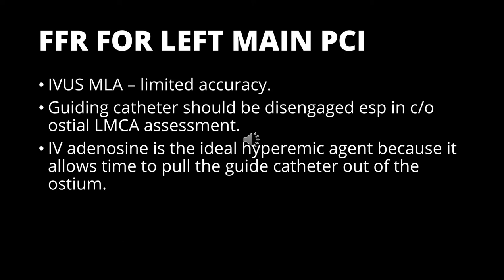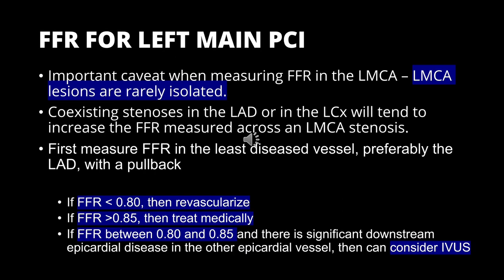For assessment of an ostial left main, since the guide catheter must be disengaged, intracoronary hyperemic agents may not be the ideal choice, making IV adenosine a better option. Another important point is that left main stenosis is very rarely isolated — it is usually associated with disease in the LAD or left circumflex artery. Coexisting disease in the LAD or circumflex will tend to increase the FFR value while measuring it for left main coronary artery disease. The recommendation is to measure FFR in the least diseased vessel, preferably the LAD with a pullback. If the FFR value is less than 0.8, revascularization should be done. If FFR values are more than 0.8, there are similar outcomes between CABG and optimal medical therapy, so intervention may be deferred.